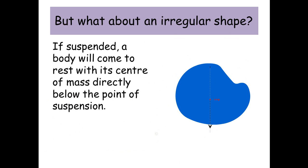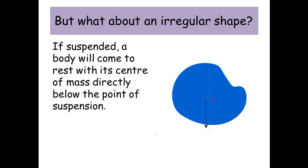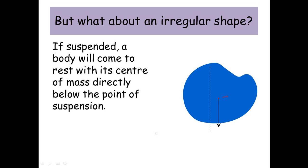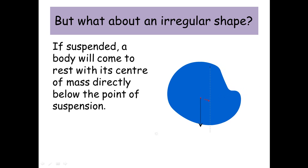But what about an irregular shape? Well, if suspended, a body will come to rest with the centre of mass directly below the point of suspension. So if you imagine a line going vertically down from the point of suspension, the centre of mass will always line up along that line.